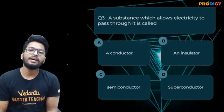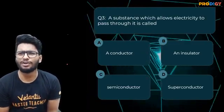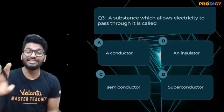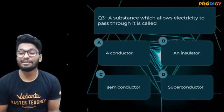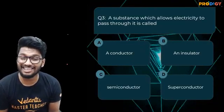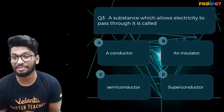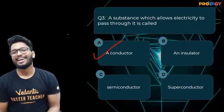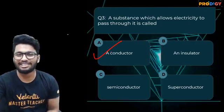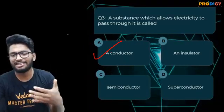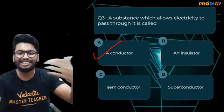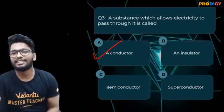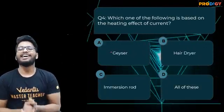A substance which allows electricity to pass through it is called — A) a conductor, B) an insulator, C) a semiconductor, or D) a superconductor. This is basically a third-standard question! The answer is conductor. Conductors are objects which allow electric current to pass through them. Insulators do not allow current to pass through them. Semiconductors conduct electricity only at a certain point — they allow electricity to pass through them after some conditions are met, which we'll discuss later. Superconductors have very little resistance — we'll talk about those later as well.